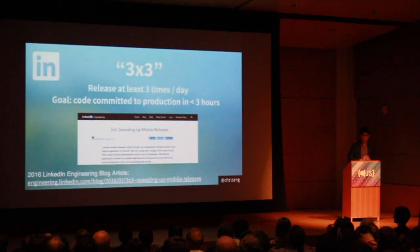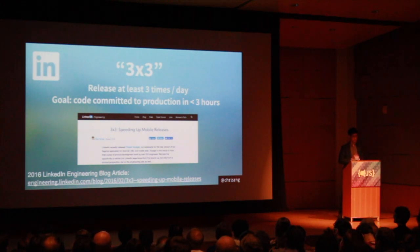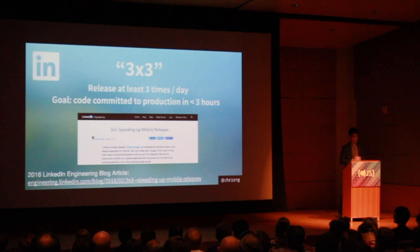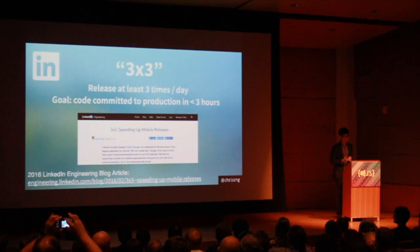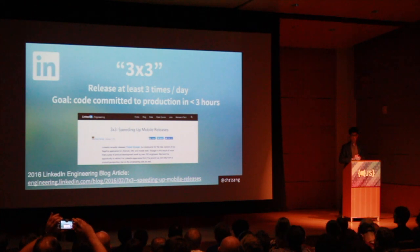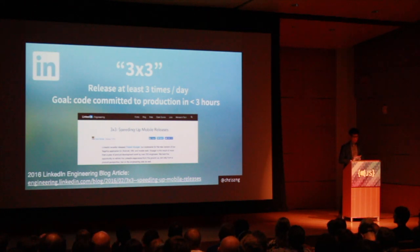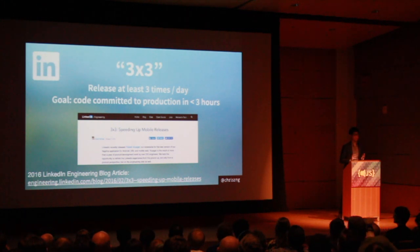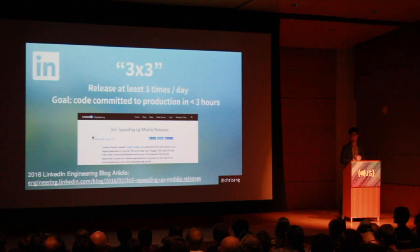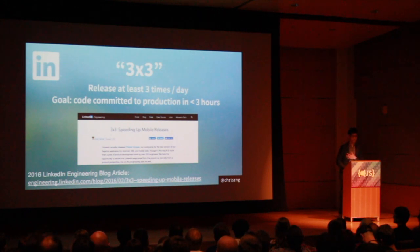At LinkedIn, we have something called 3x3: we try to release three times a day into production with the goal of getting something committed to master into production in under three hours, with no manual testing — fully automated testing, no manual QA. This empowers developers and product owners to own the application and be part of the deployment rather than just shipping off to another team.